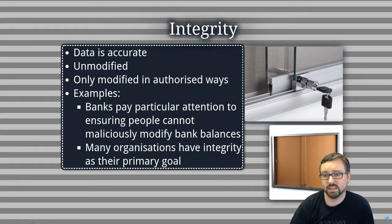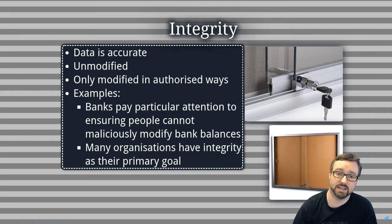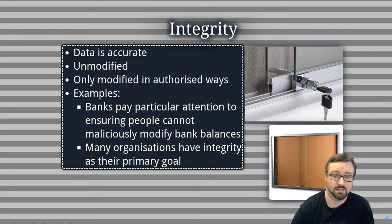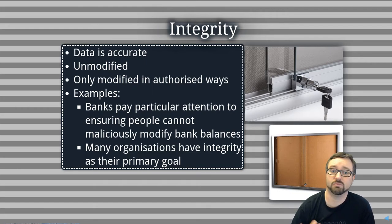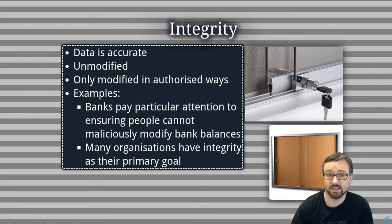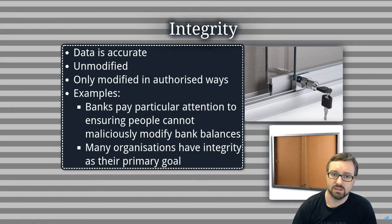Integrity is all about whether the data that you have is accurate — it is only able to be modified by people that actually have permission to modify it. For example, if you are a bank, then it's bad if people can read each other's balances, but the worst case scenario is if someone can change bank balances. Integrity is really the highest possible priority there. A lot of organizations in the real world have integrity as their highest goal because it is particularly bad if you lose things like sales or your information is corrupted, destroyed, or modified in unauthorized ways.